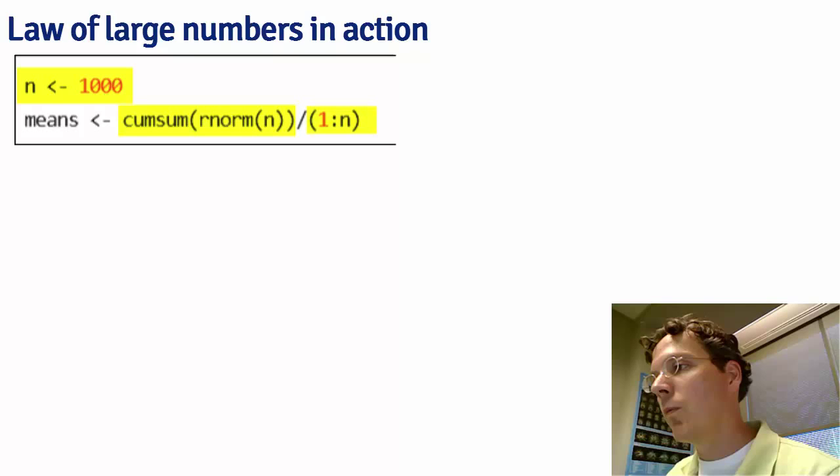In other words, the mean of the first observation by itself, then the mean of the first and the second observation, then the mean of the first, second, and third observation, and so on.